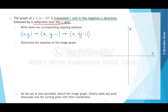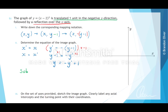For part 2, we want to determine the equation of this image graph. We generate two equations: the first is that the transformed x value equals x, and the second is that the transformed y value equals negative y minus 1. Once again, we solve for the non-dash terms. We have x equals x-dash. For the second equation, we start by multiplying everything by negative 1, finding that y minus 1 equals negative y-dash. Then we add 1 to both sides, giving y equals negative y-dash plus 1.